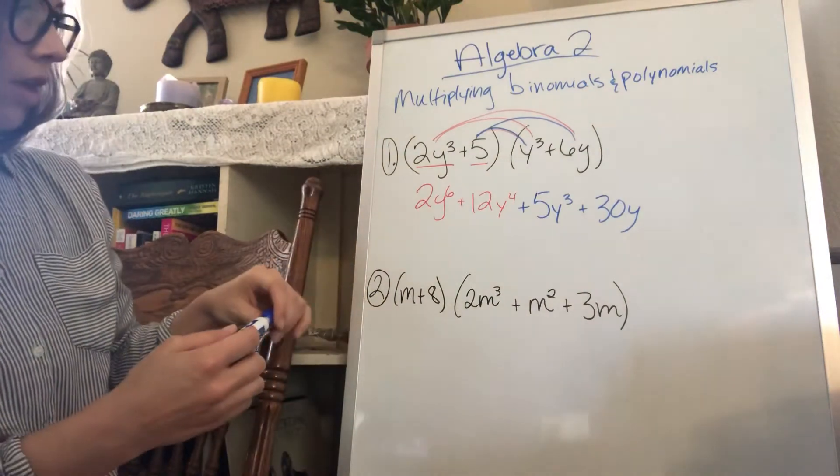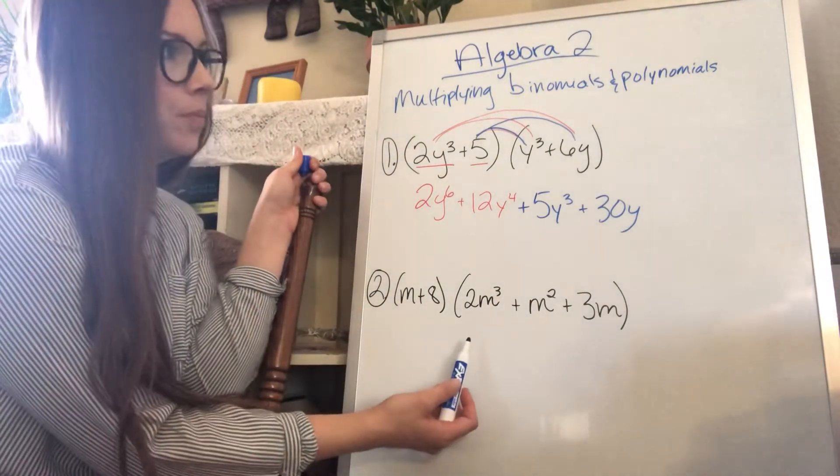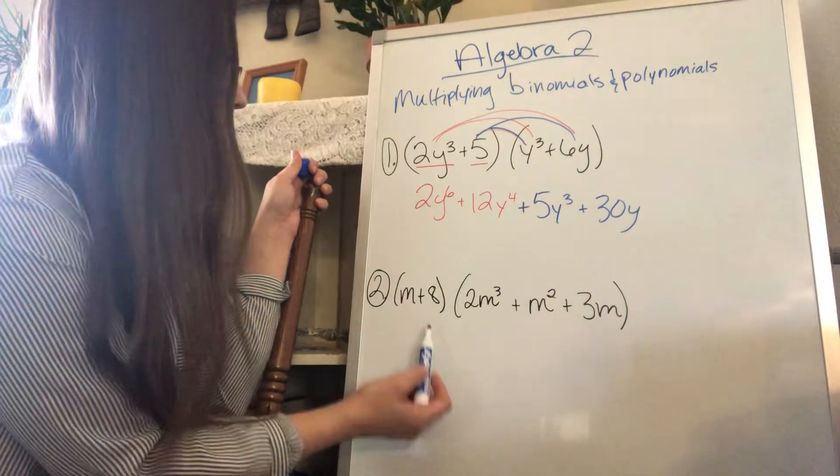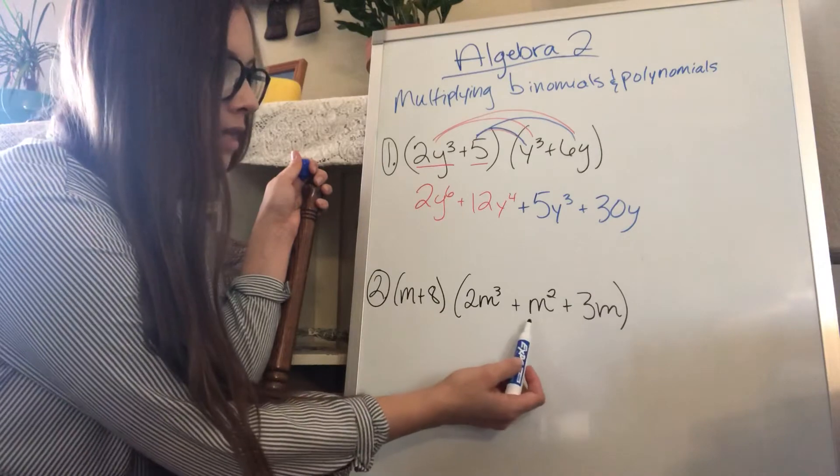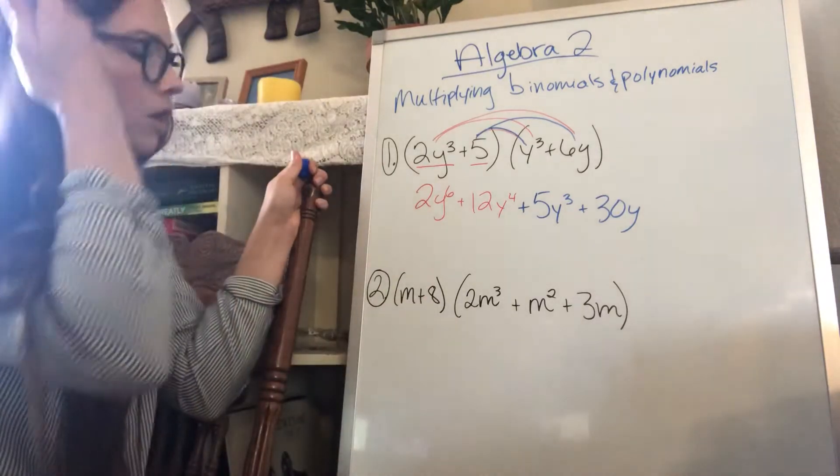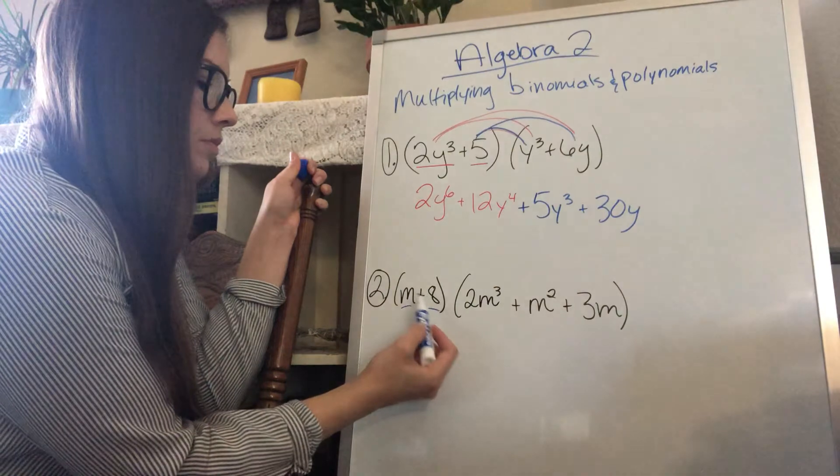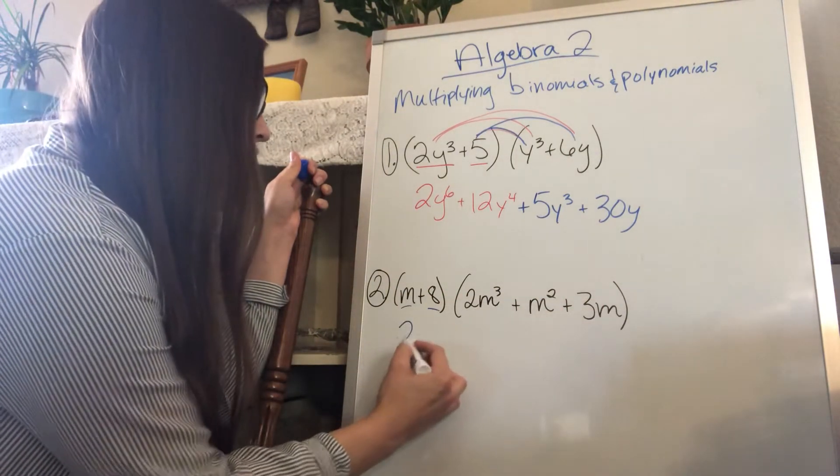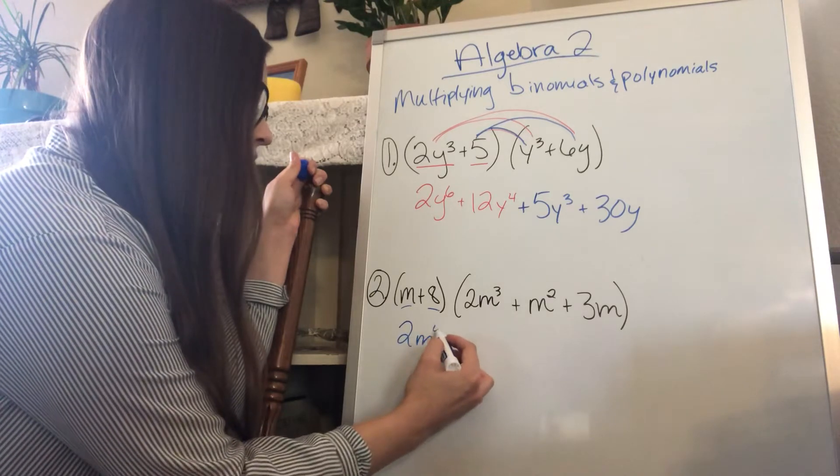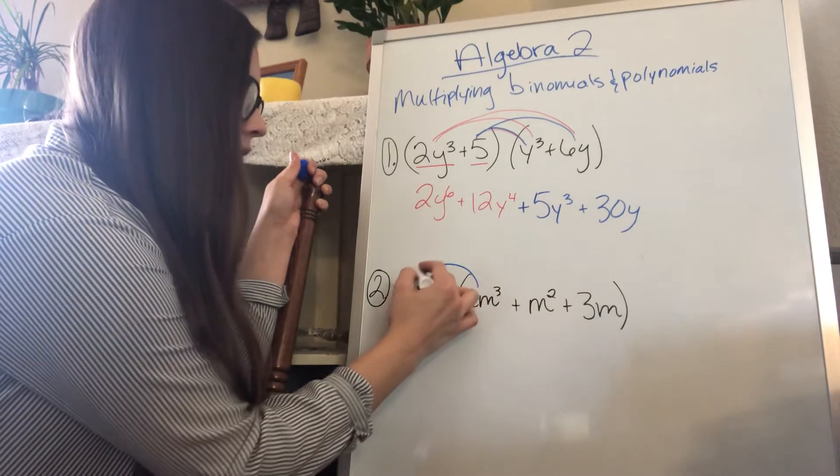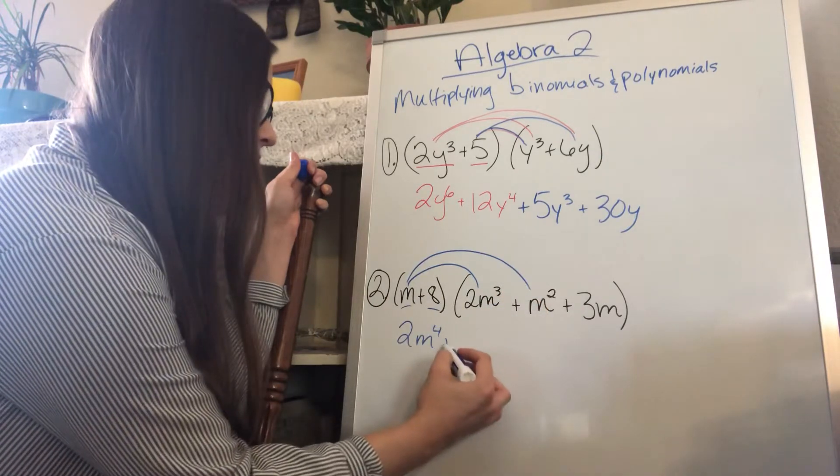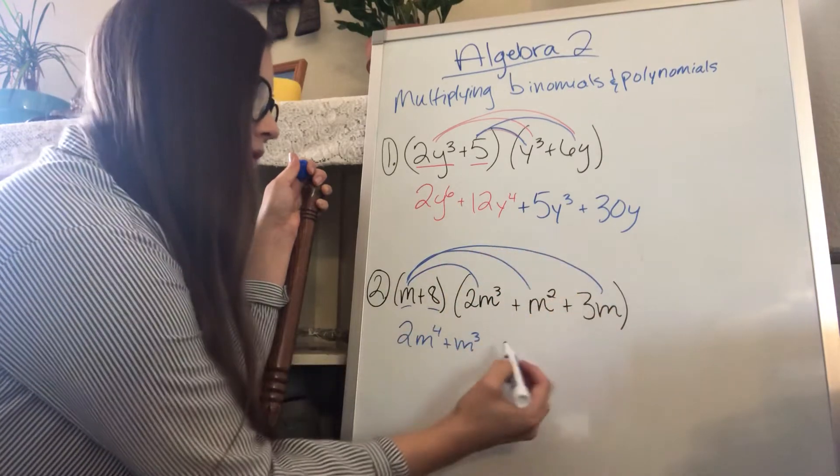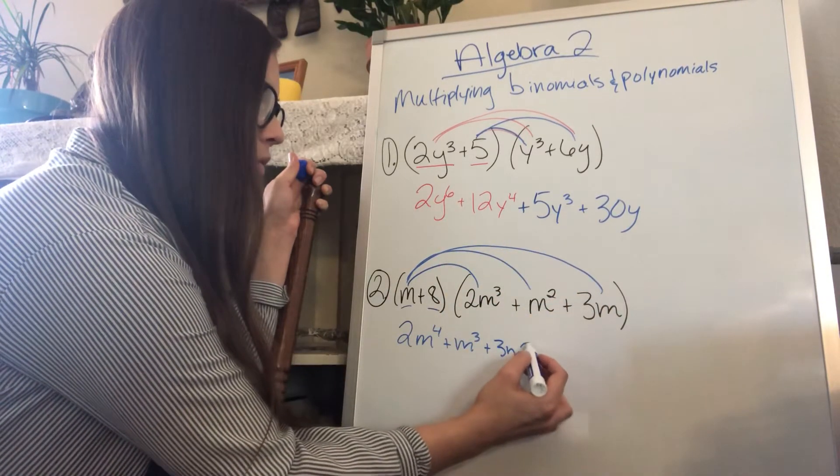So let's do this one now. Here we have a 3-term polynomial or a trinomial that we're multiplying by a binomial, the 2-term polynomial: m plus 8 times 2m cubed plus m squared plus 3m. So again, we're just distributing each term to each other term there. So m times 2m cubed is going to be 2m to the 4th. m times m squared is going to be m cubed. m times 3m is going to be 3m squared.